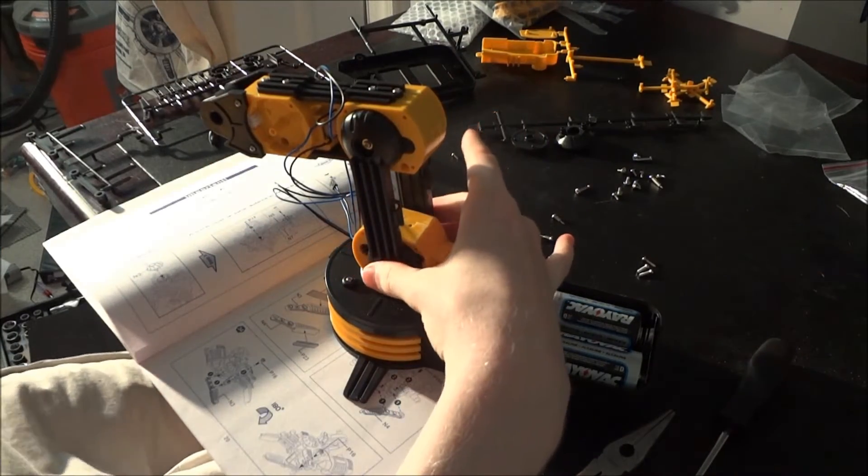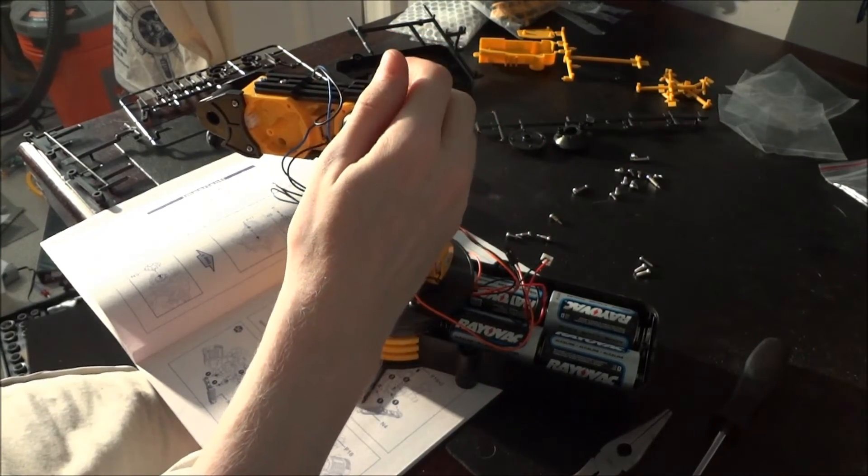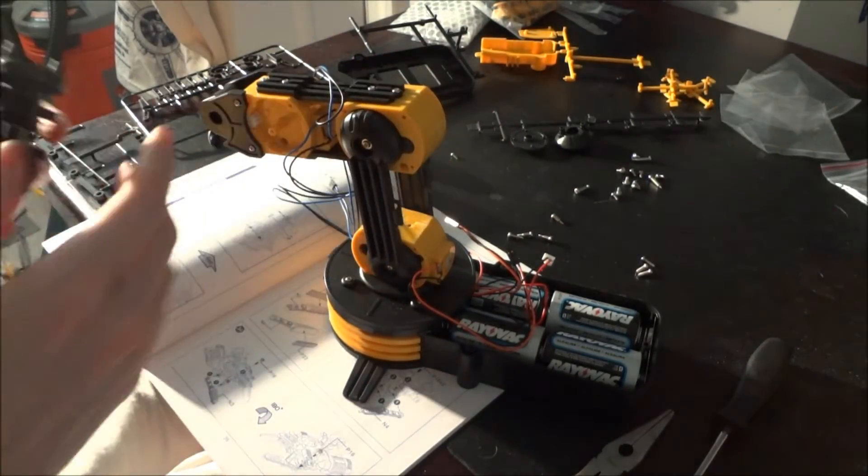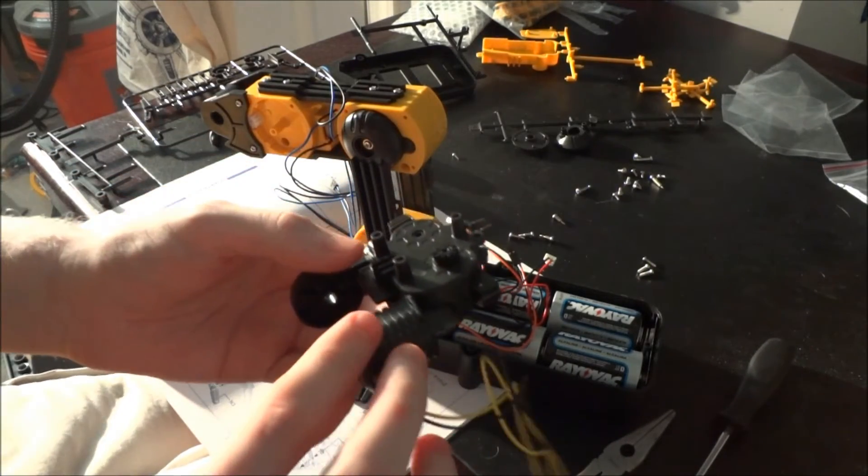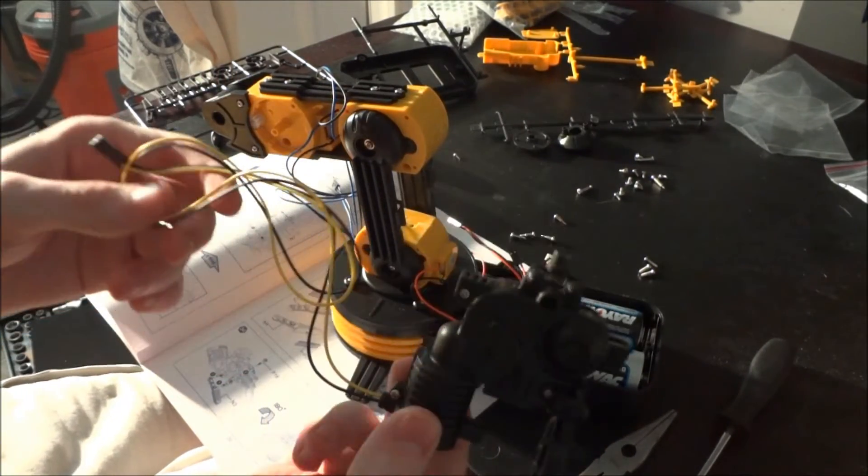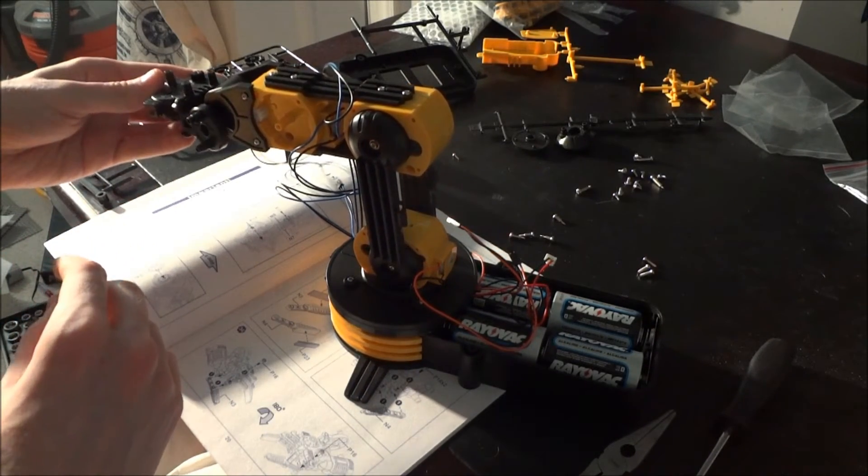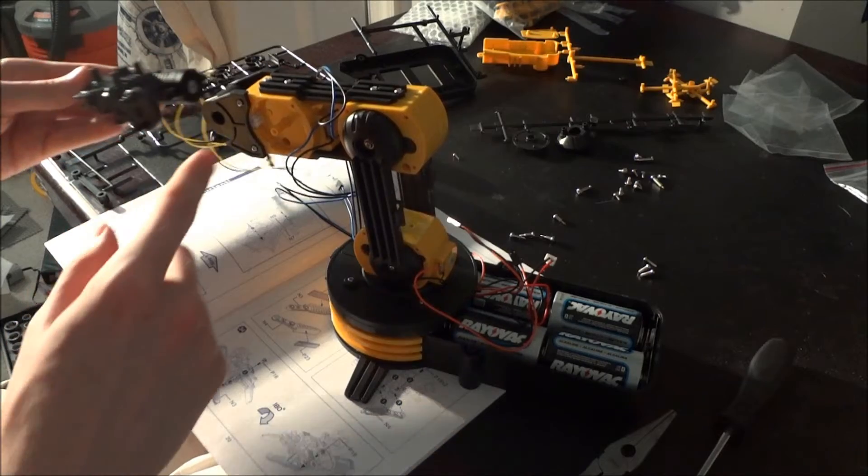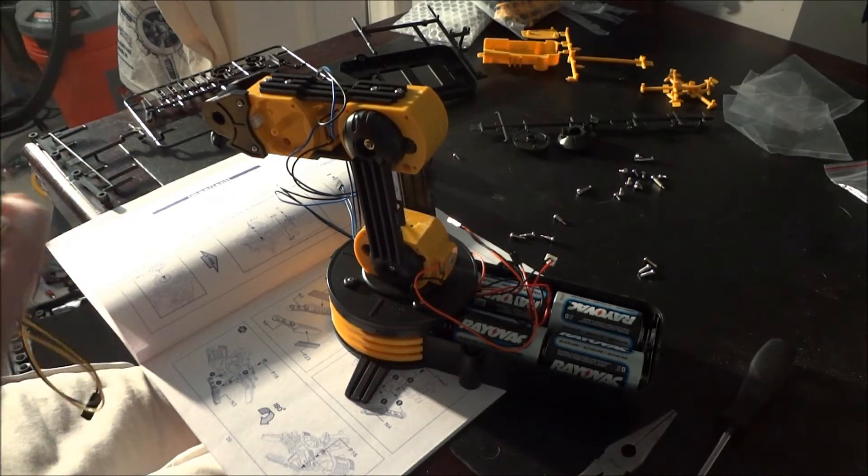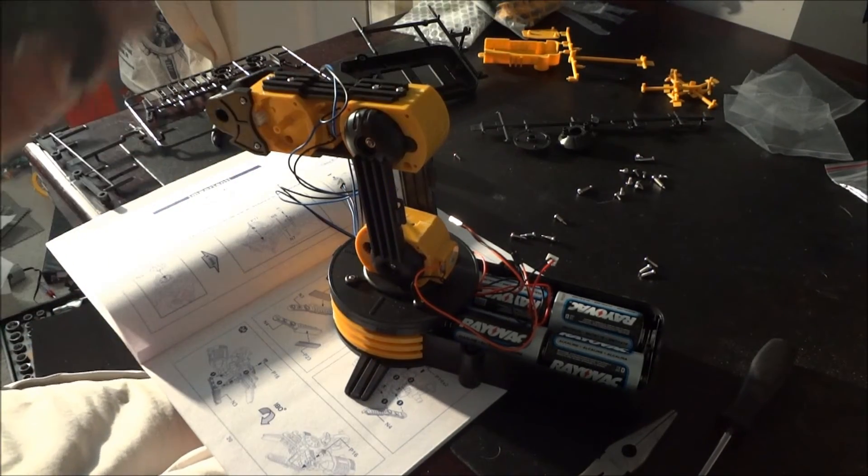We've taken care of getting the arm installed on the bottom motor and getting the other motor attached. Right now I'm working on getting the gripper motor put together, and then we'll attach that to be controlled with the wrist.